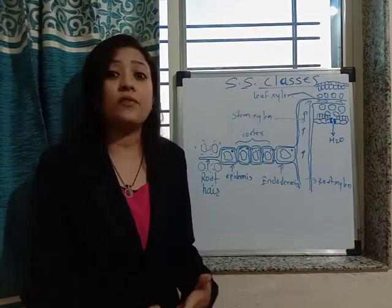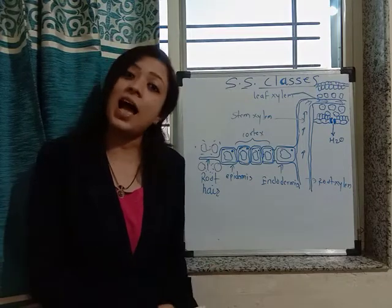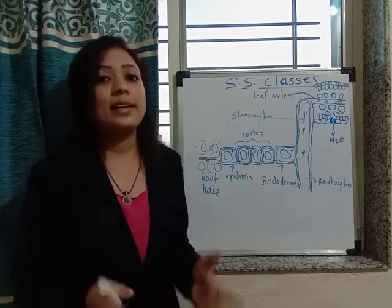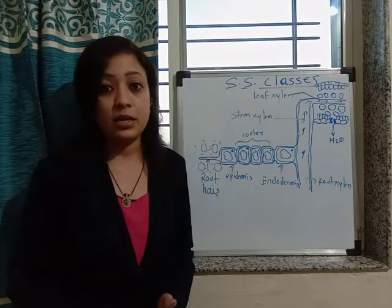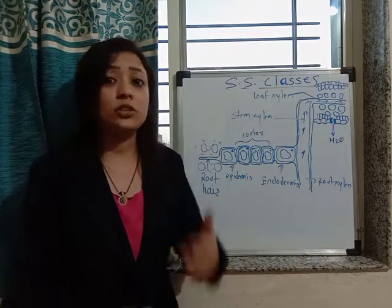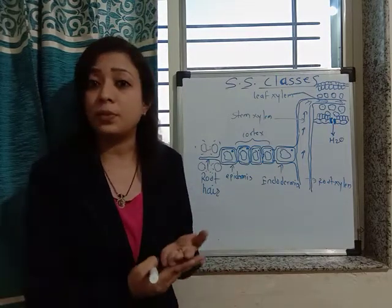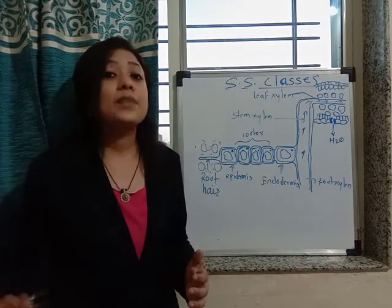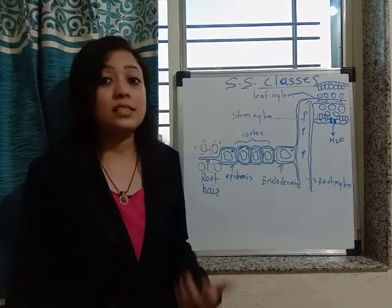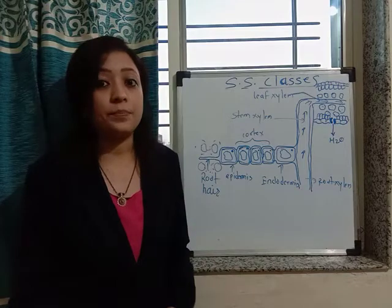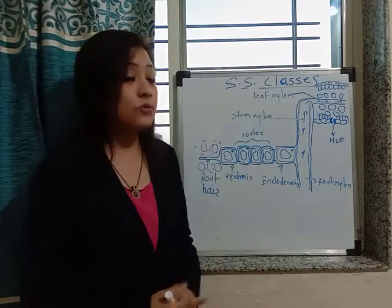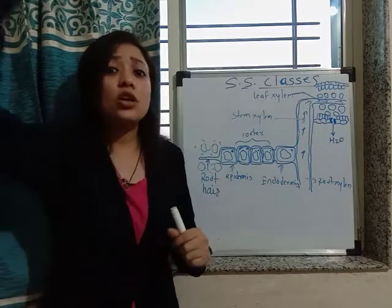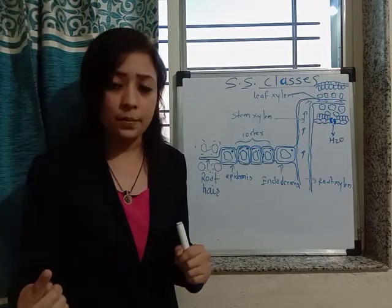The ventral surface of the leaf also has stomata, but in the ventral surface the stomata are present in very small numbers. The maximum number of stomata are present on the dorsal surface of the leaf, through which water evaporates into the atmosphere. As the plant releases excess water through its aerial parts, that creates a low pressure area at the top.